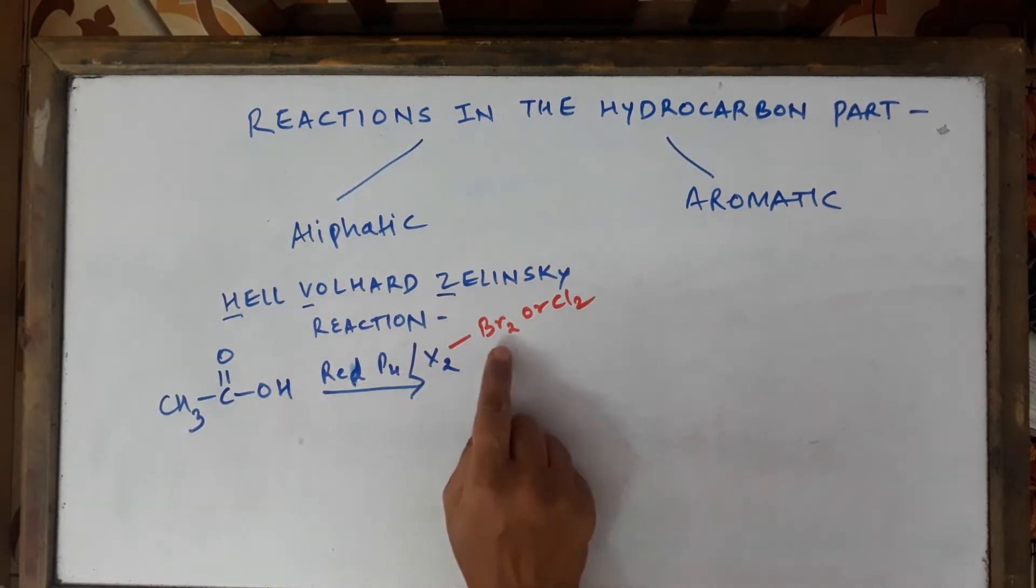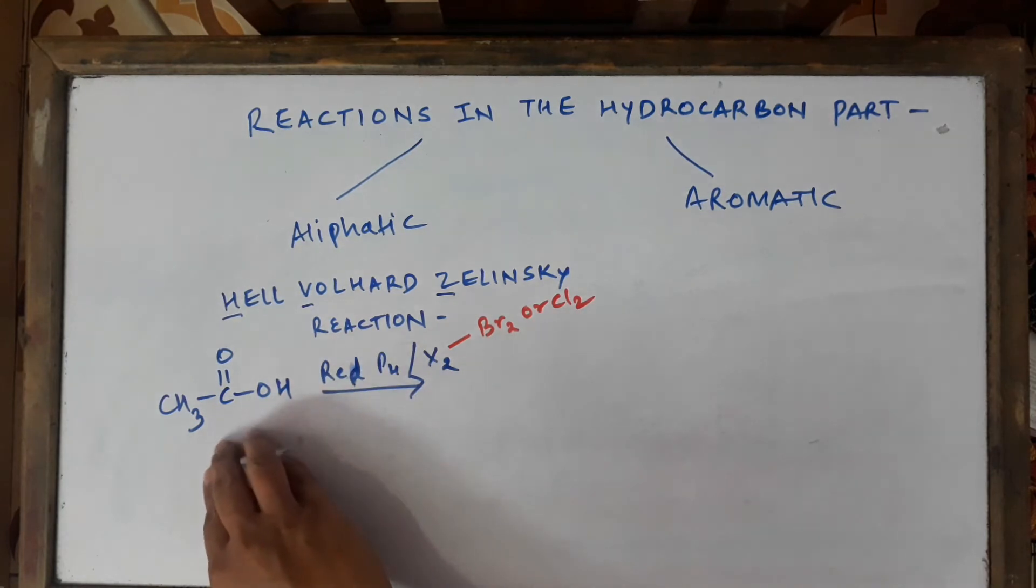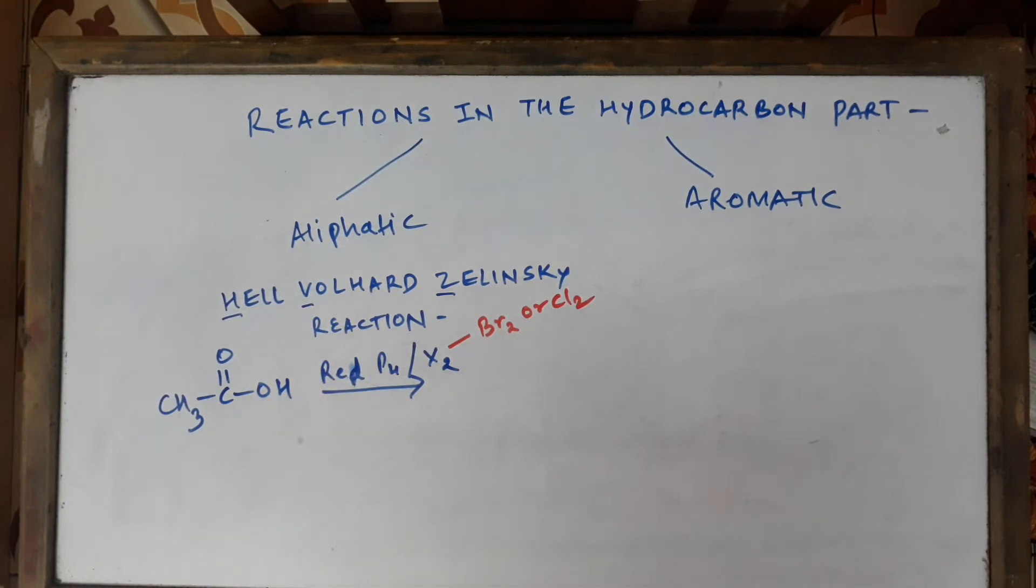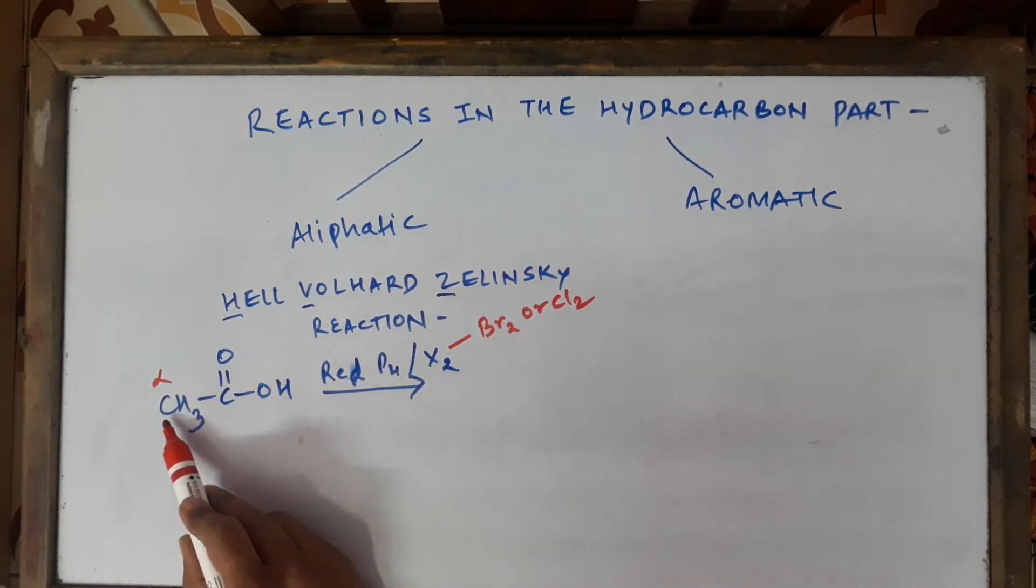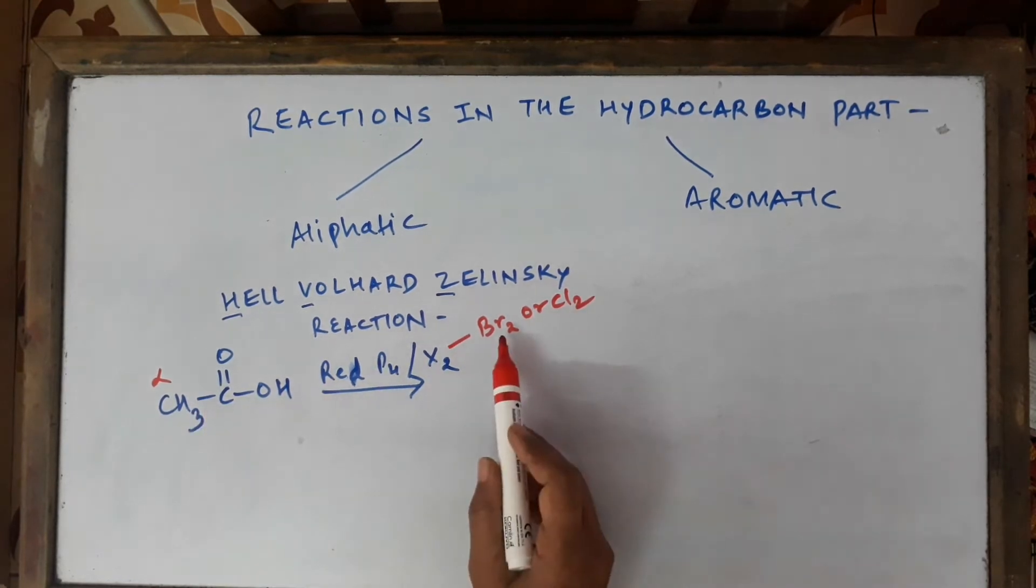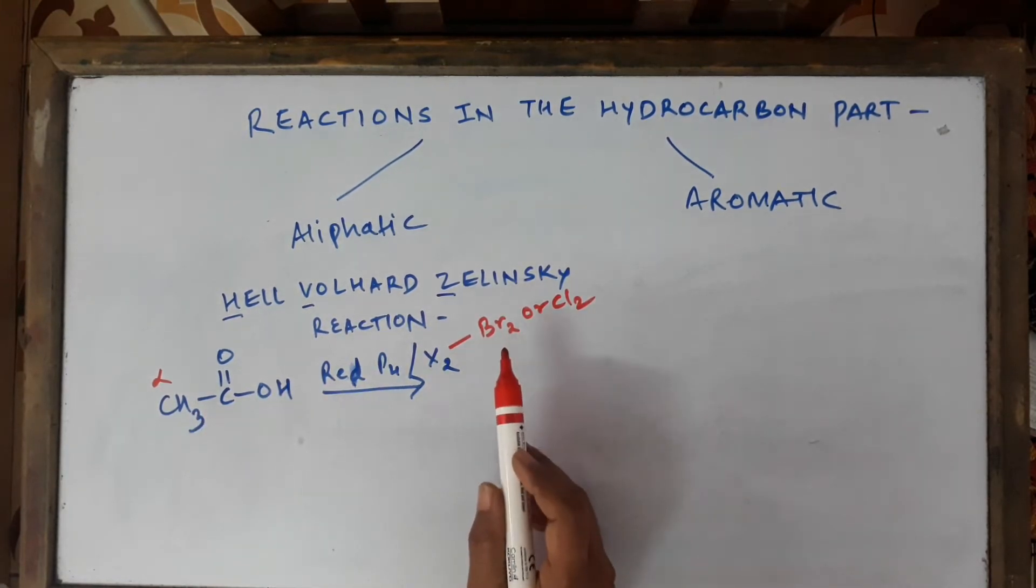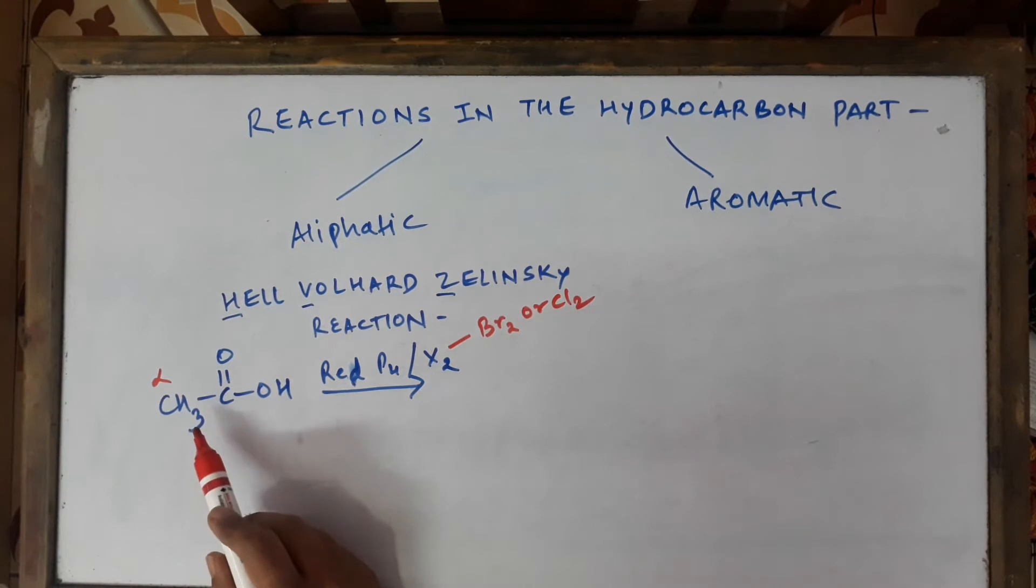When we do this, naturally we will be getting PCl3 or PBr3, and that will be reacting with this acid. Alpha halogenation takes place. This carbon atom to which the functional group is attached is called the alpha carbon atom. The alpha hydrogen atoms will be getting substituted by the halogen atoms one by one. All the three hydrogens are going to be successively substituted.